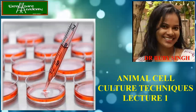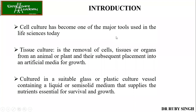Good afternoon and welcome back to Excelsior Academy. Today we'll be doing animal cell culture techniques part one. We'll cover what cell culture is, how it is done, why it is done, and its applications. Cell culture has become one of the major tools used in life sciences today. Viruses like coronavirus — to understand how they attack humans, whether affecting the lungs, kidneys, or other organs — all these studies are now done using animal tissue culture.